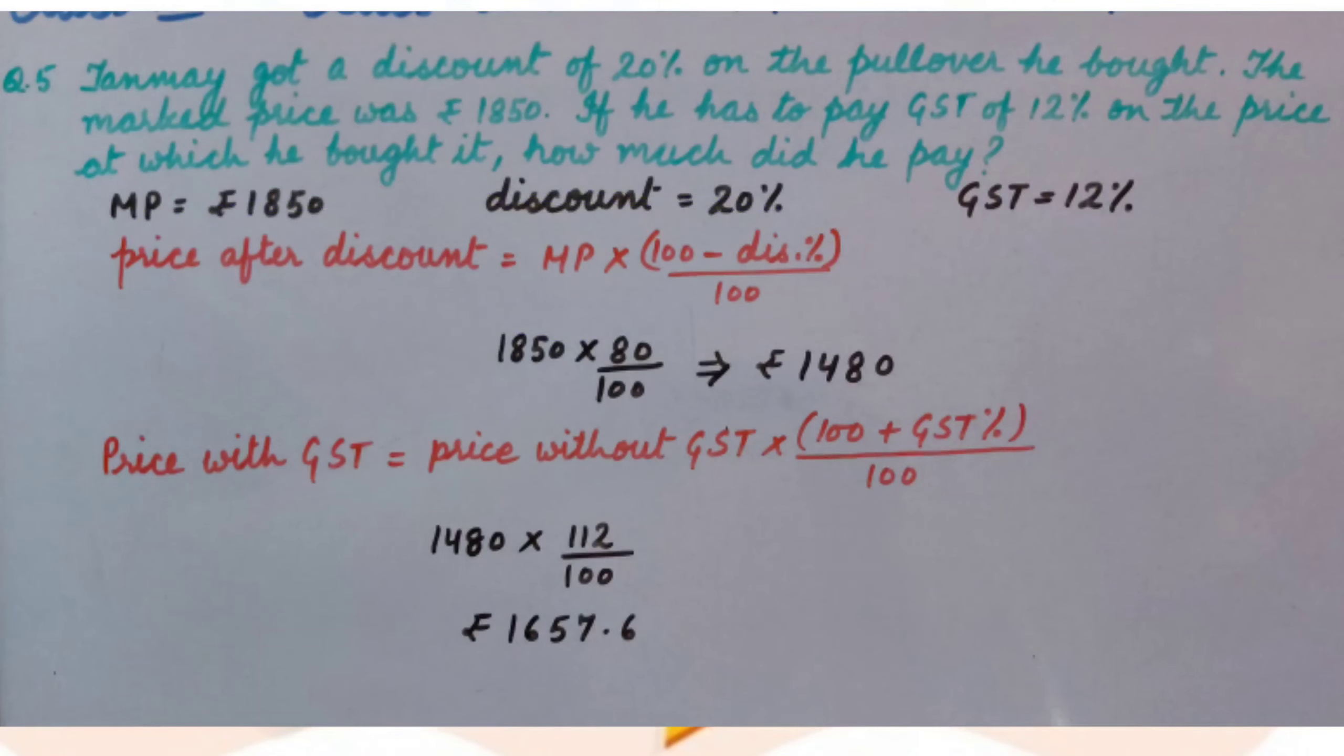So, price after discount is MP multiplied by 100 minus discount percent upon 100. Inserting the values we get 1850 multiplied by 80 upon 100. Therefore, Rs. 1480 is the price after discount.